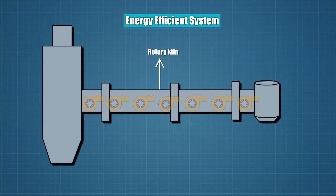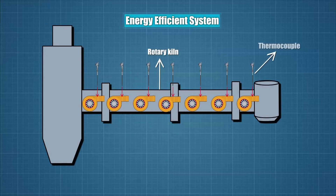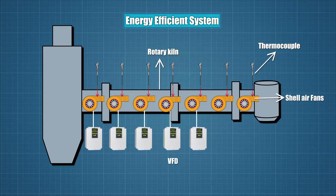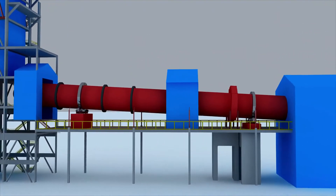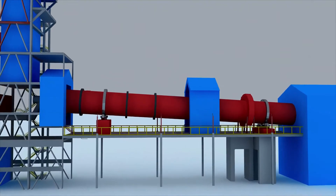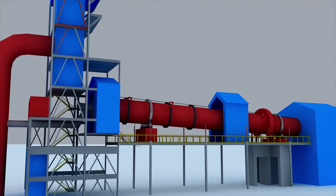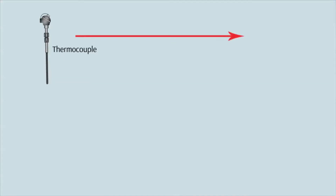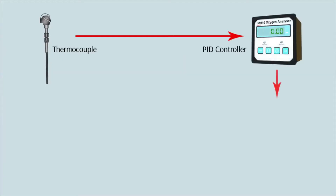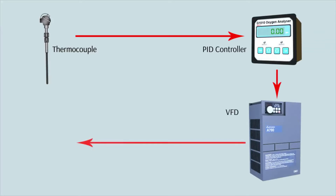With the installation of individual variable voltage frequency drives of 11 kilowatt, we control each shell air fan independently and they can be individually changed as per the volume required. For the purpose of automation, feedback from the individual thermocouples will be taken and the corresponding speed of the shell air fans will be noted. This will form a closed loop and the feedback will be received by a PID controller.